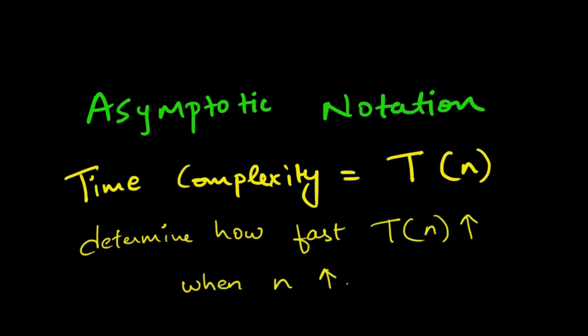When we compute the time complexity, which we will represent as T(n) of an algorithm, we rarely get an exact result, just an estimate, and that's fine.